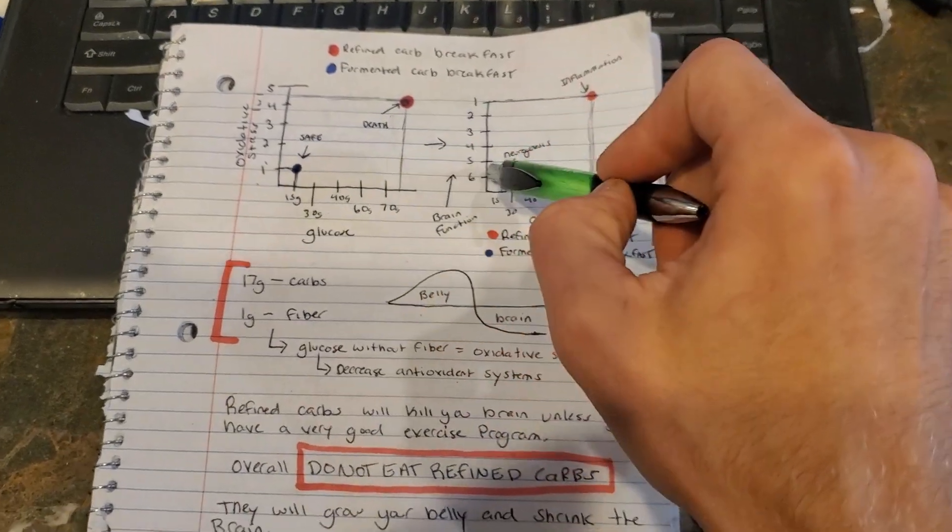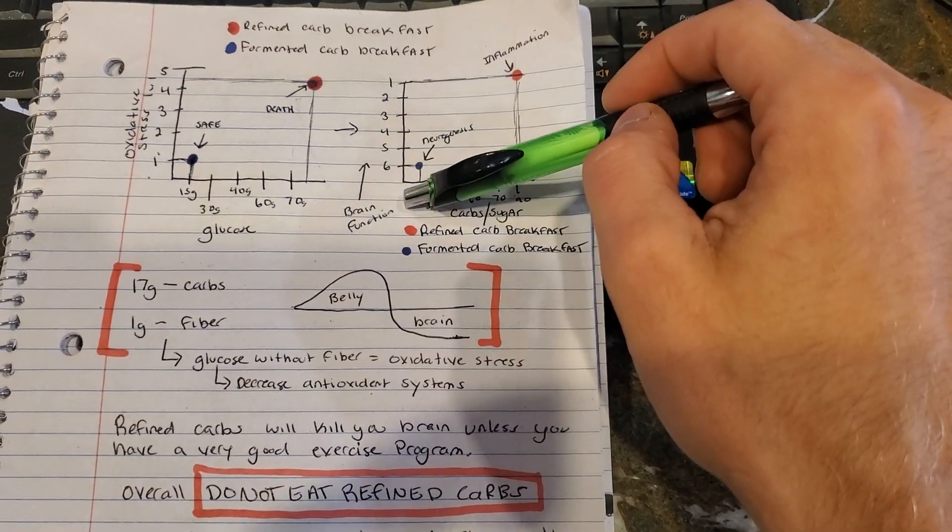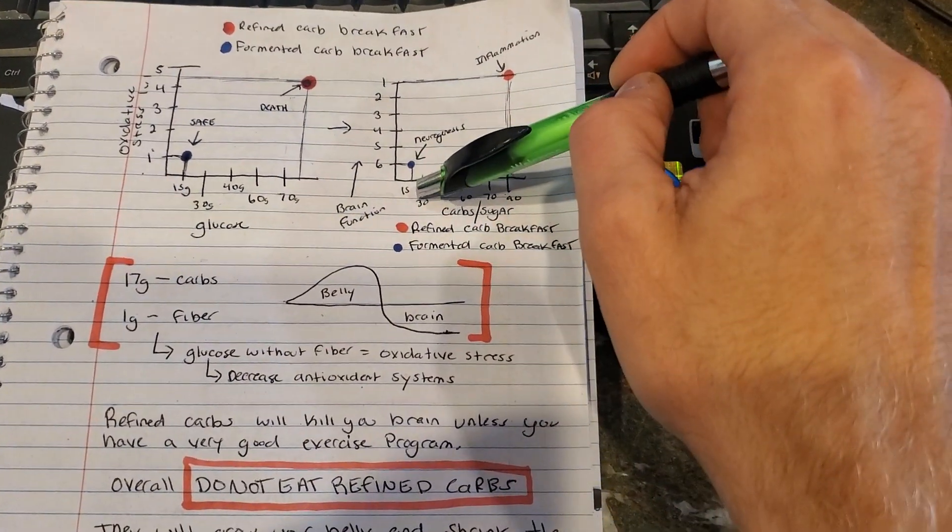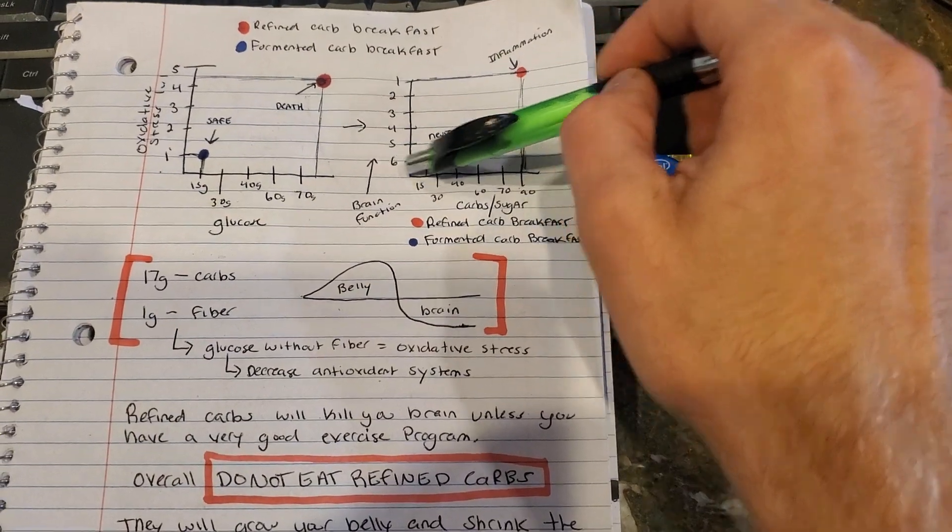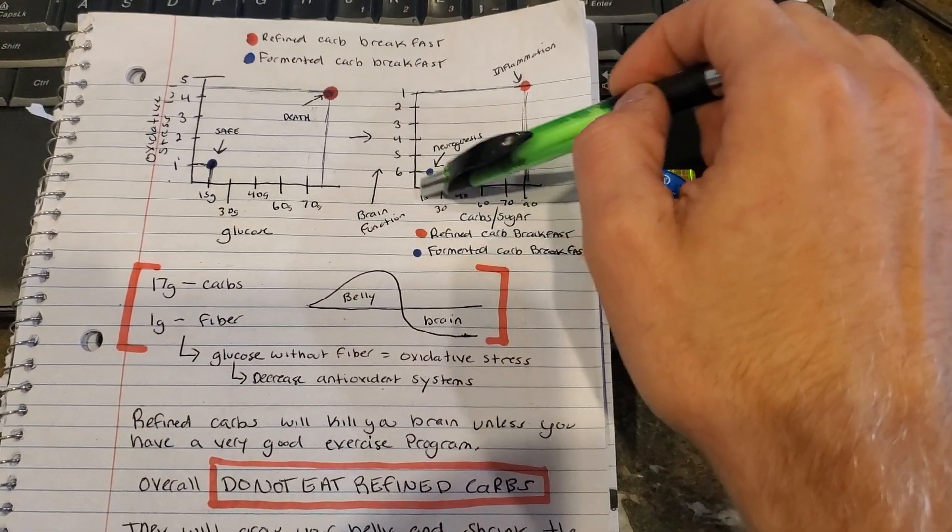Now jumping over to brain function and how these two correlate to each other is that 15 grams of carbs, right? Your body is going to be able to use that really quick and it's going to jump back into its fat burning state. So your neurogenesis is going to be a level of six when you're eating about 15 grams of carbs, especially if you have a lot more fiber. Fermentable foods are very good.